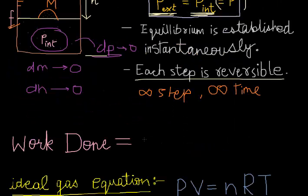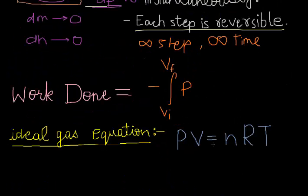So we can say that the work done in this process is minus integral V initial to V final and P external as I have shown you here that P external equals P. So P external into the change in volume dV.